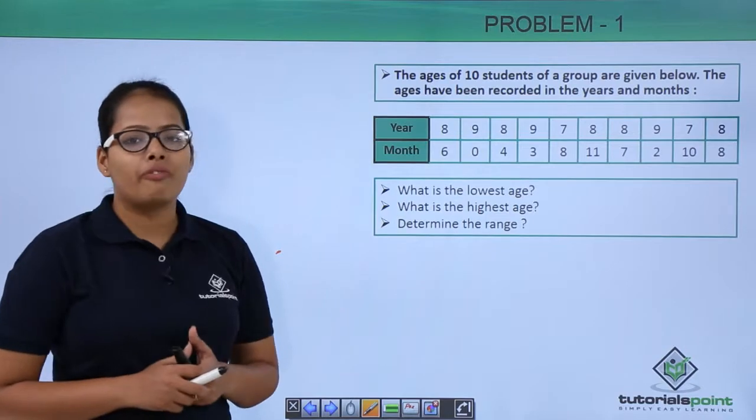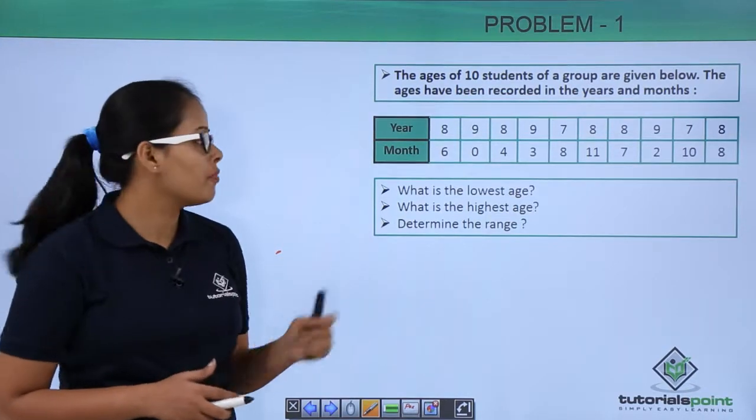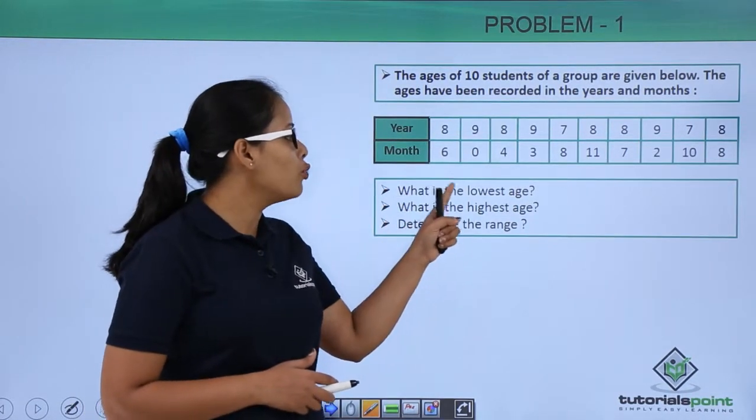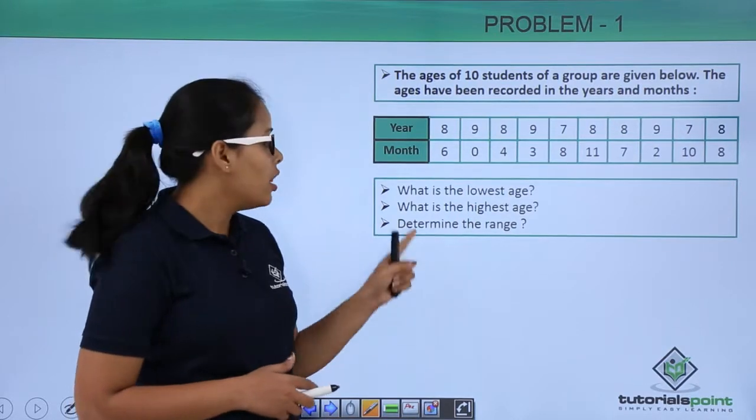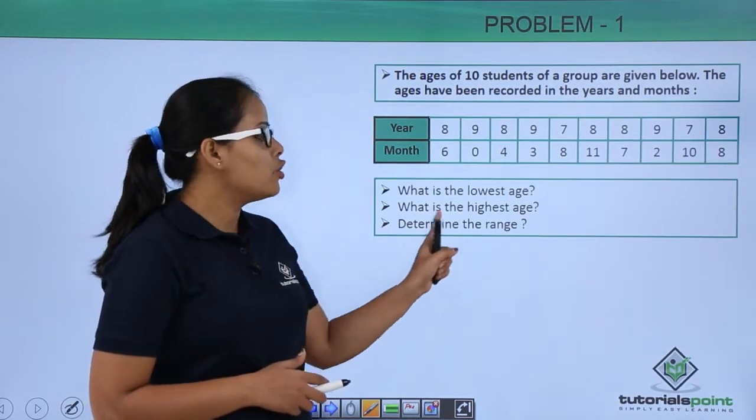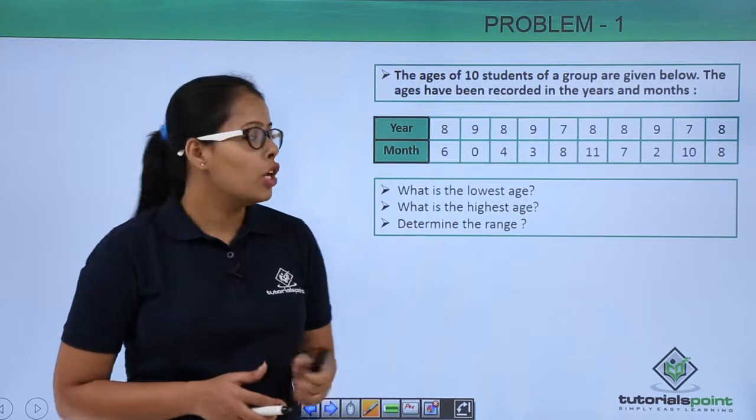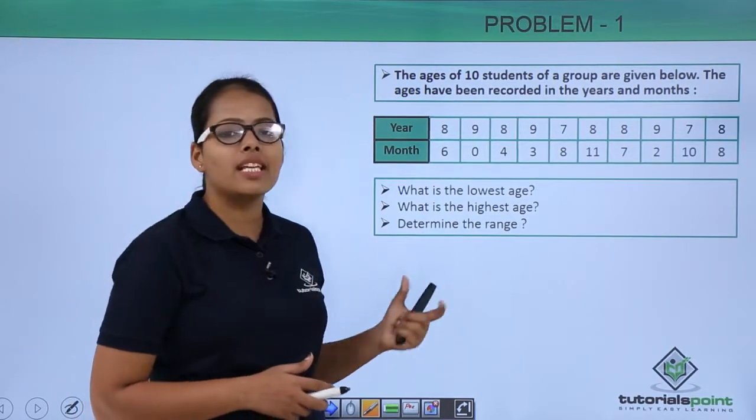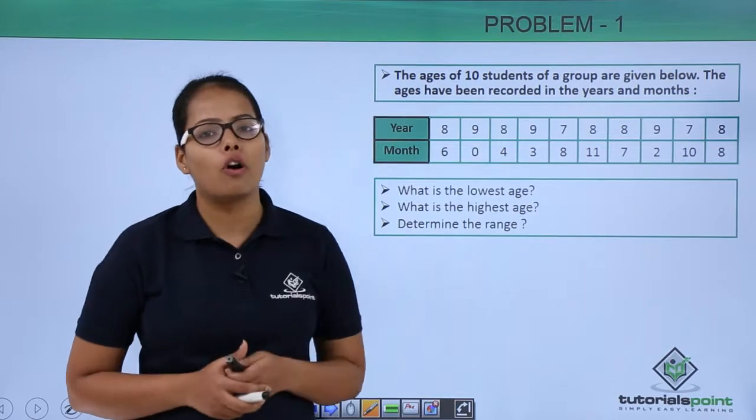Now what you need to find out based on this table? Here you need to find out what is the lowest age. Then you need to find out what is the highest age and then you need to find out the range. So let's proceed with all these answers or explanation of all these questions.